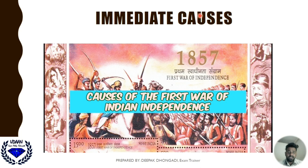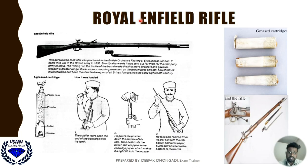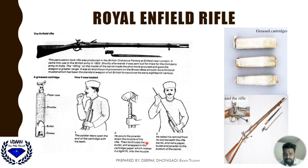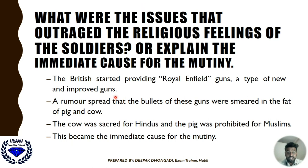The immediate cause for the first war of Indian independence was the use of Royal Enfield guns. These guns had a greased cartridge. The soldier had to tear open the end of the cartridge with his teeth, pour the powder down the muzzle of the rifle, and then thrust the bullet — still wrapped in the cartridge paper — into the muzzle before firing. The cartridges had to be opened with the mouth.